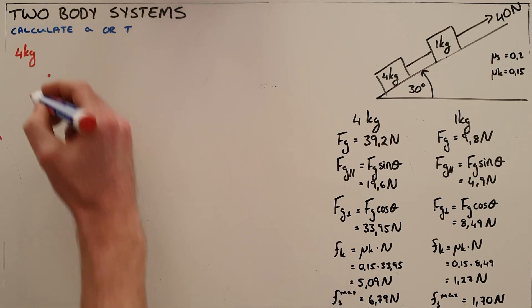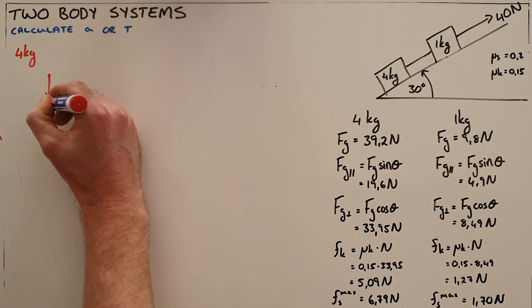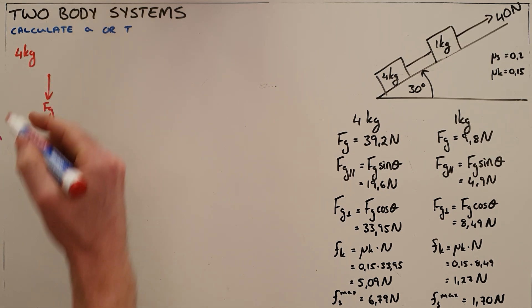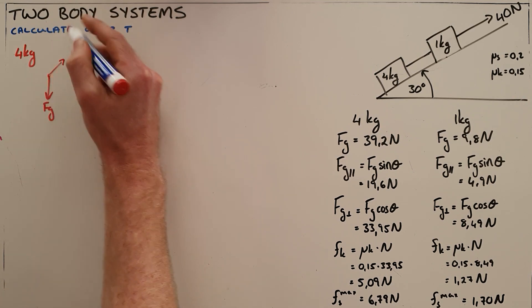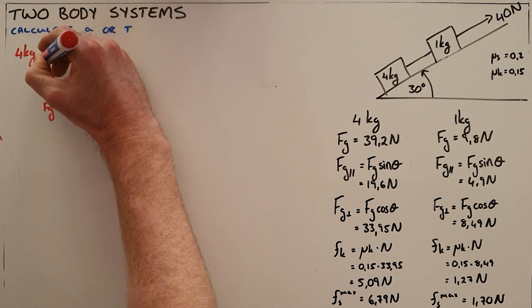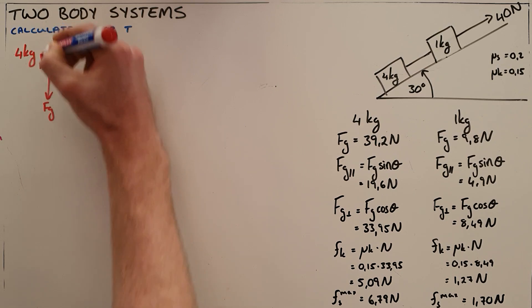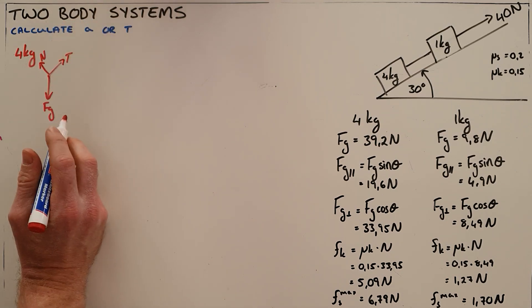For our 4 kilogram object we know that there is a gravitational force pulling that object downward, we know that there's going to be a tension force that is pulling that object up the slope, we know that there is going to be a normal force that is acting perpendicularly to the slope.